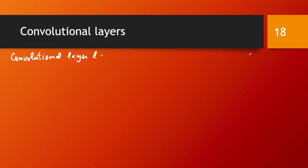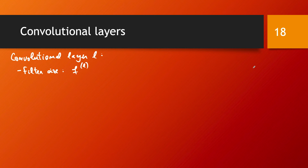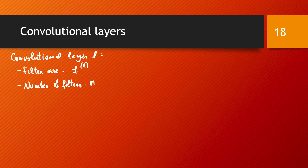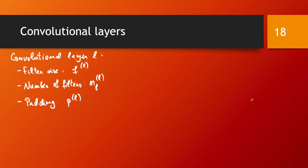When setting up convolutional layer L, there are several things to choose. First, the filter size, denoted F. The number of channels in the filter doesn't need to be chosen because it's always equal to the number of channels in the input. You do choose the number of filters, denoted NF_L. You also choose the amount of padding, denoted P_L, and the stride, denoted S_L. Once you choose these, you have everything needed to run this convolutional layer.